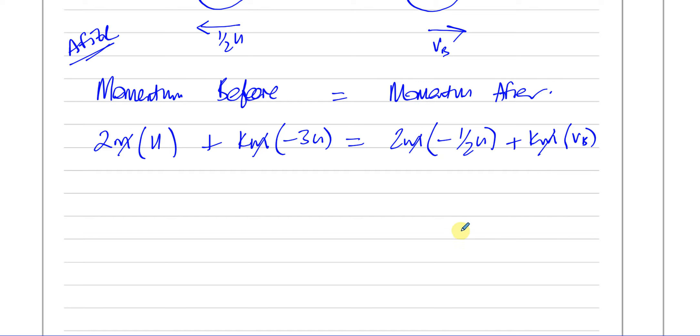Now let's just simplify. We've got 2U. Be very careful about the signs. Minus 3KU is equal to minus U and that's plus K times VB.